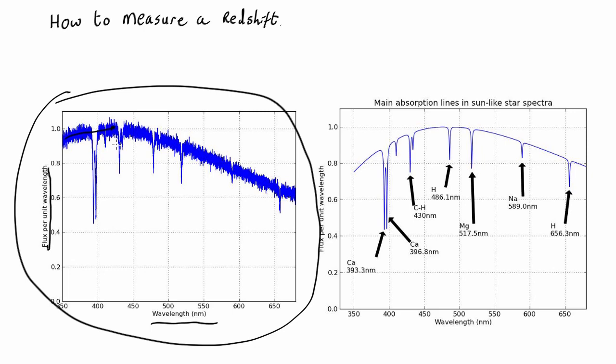So you can see the spectrum peaks around here, gently drops off, but it's got a whole bunch of absorption lines which we can hopefully use to measure the redshift.